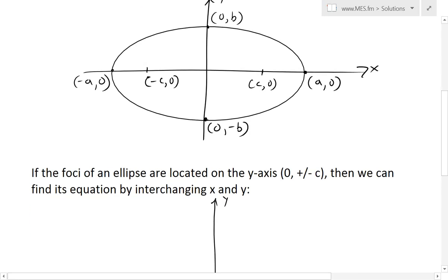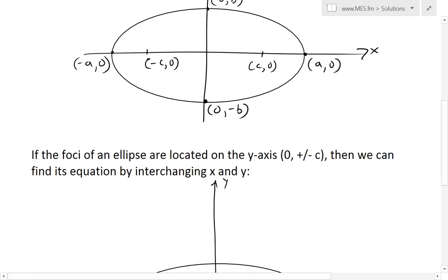But now the case here is, what if the foci or the focus points, these plus or minus c's of an ellipse are located on the y axis, so across this, as opposed to the horizontal axis.